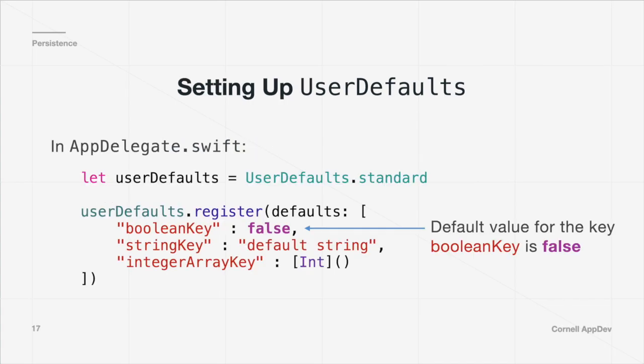To set up UserDefaults you instantiate it in the AppDelegate.swift file and you can also register some default values for keys. We write: let userDefaults = UserDefaults.standard to initialize it. Then we register three key-value pairs, setting a boolean key to false, a string key to a default string, and an integer array key to an empty integer array.